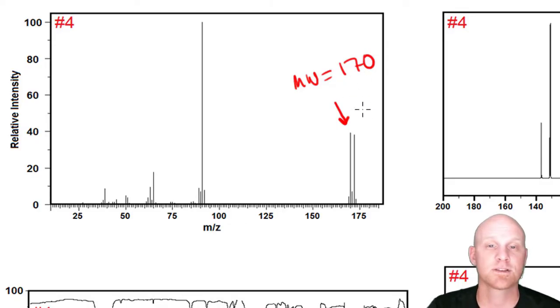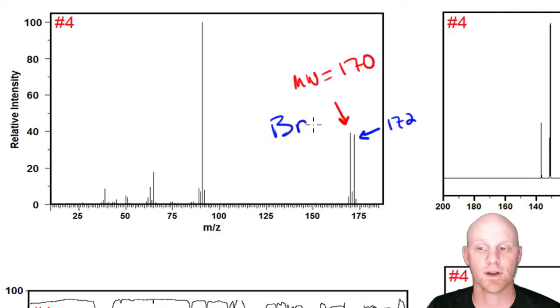Then I ask myself, is there an M plus 2 peak? Right over here there is indeed an M plus 2 peak at 172. Most compounds don't have any significant M plus 2 peak, so when you do have one it stands out. With it being roughly equal in height, that's a dead giveaway—you have a bromine. Had it been only a third as tall, we would have known we had a chlorine. So far we know our molecule has a molecular weight of 170 and we have a bromine in it.